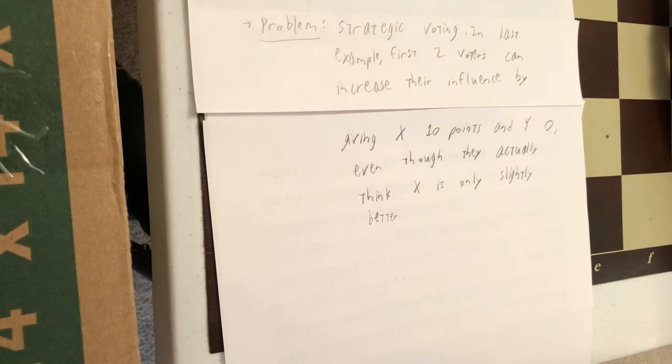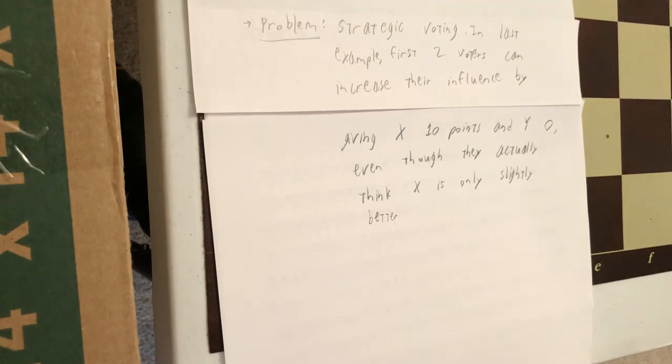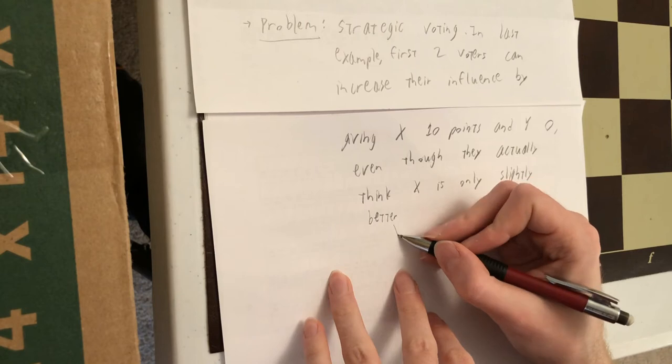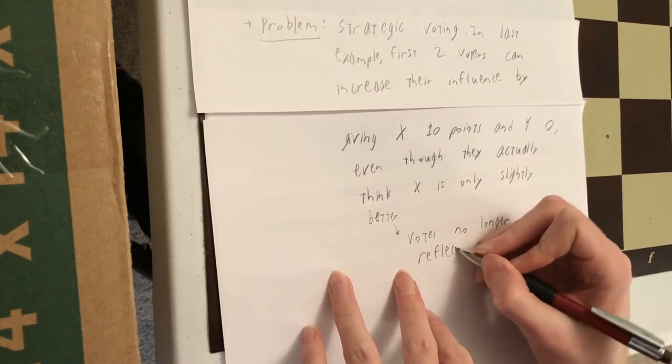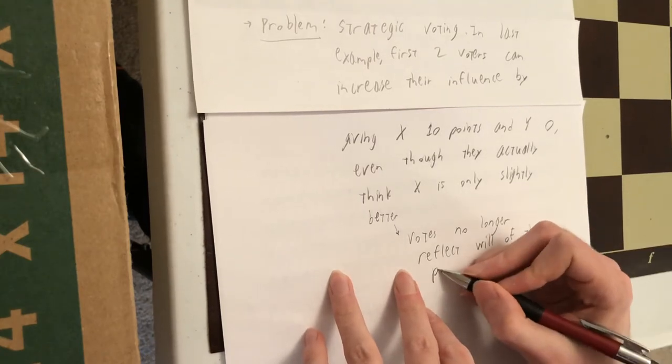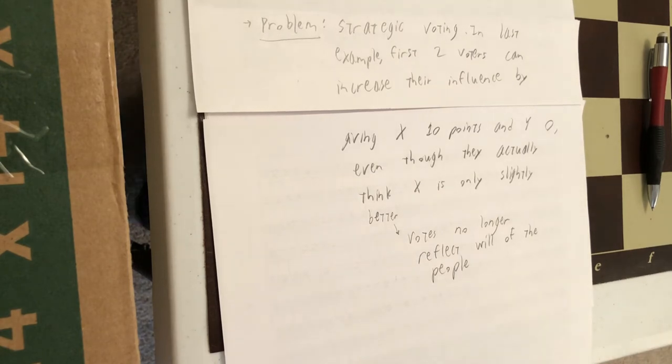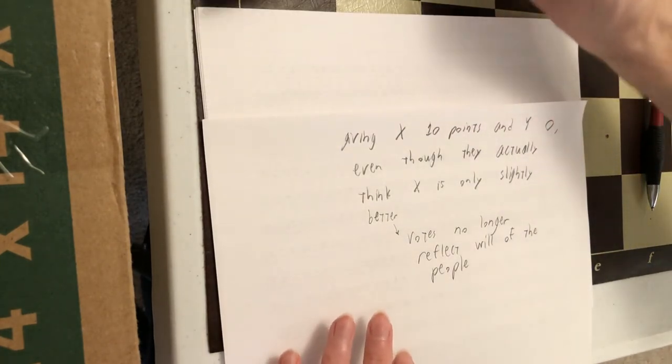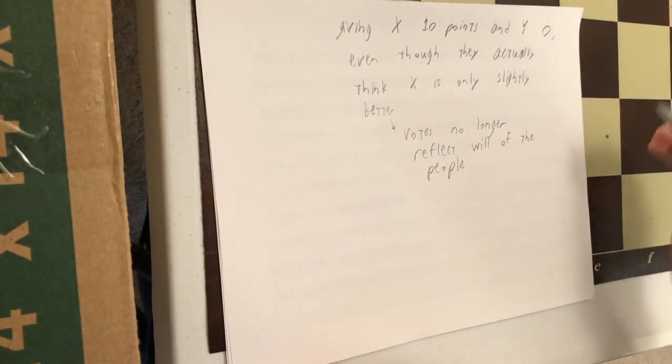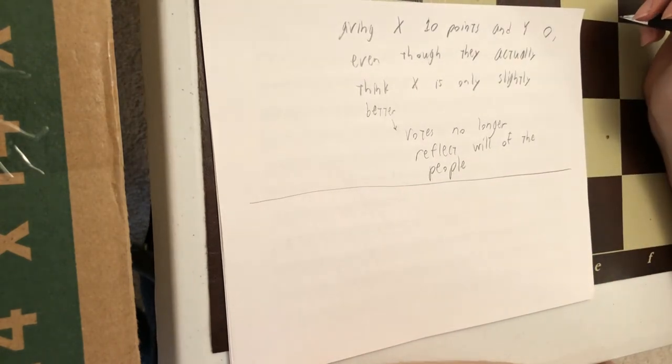And the other issue we talked about earlier about strategic voting is that once your votes do not reflect your true preferences, you start doing things like this, then the outcome of an election no longer reveals the will of the people. So we're not really sure that the election winner really is the best choice for society. So range voting is also flawed.